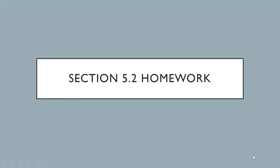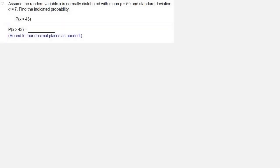We're looking at homework from section 5.2, question number two. Assume the random variable X is normally distributed with mean mu equals 50 and standard deviation sigma equals 7. Find the indicated probability: the probability that X is greater than 43.